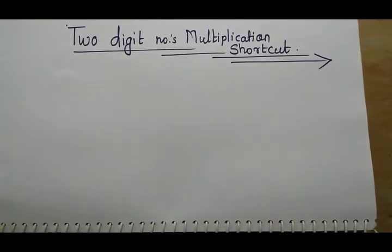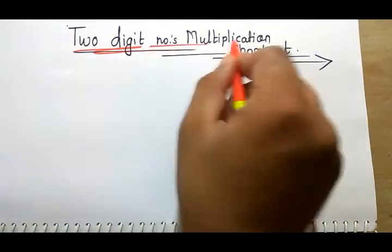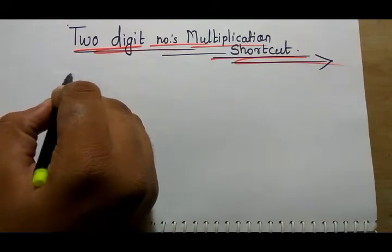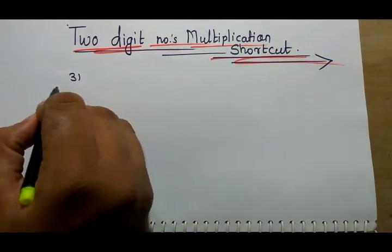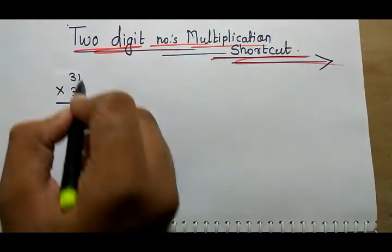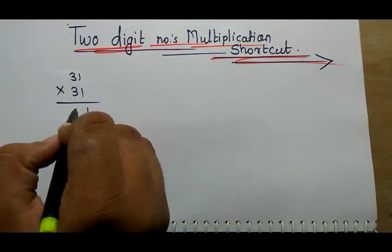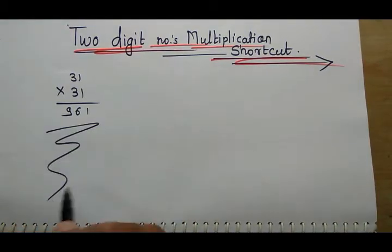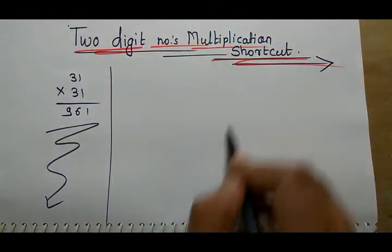Hey guys, I am Akash Mandhan. Now we are going to see two-digit numbers multiplication shortcut. Before seeing this concept, I'm going to show you how I can do this. If I take 31 into 31, my answer is 961. Are you amazed? Of course, I am going to tell you within a moment.